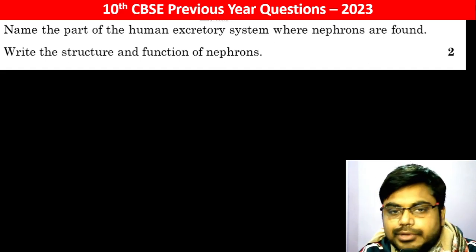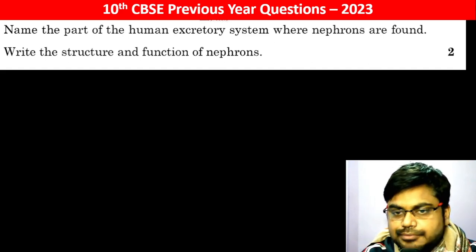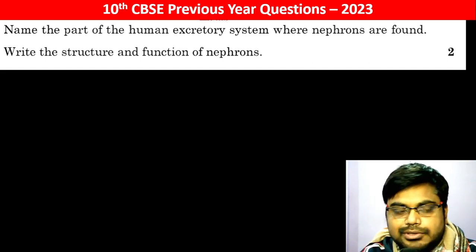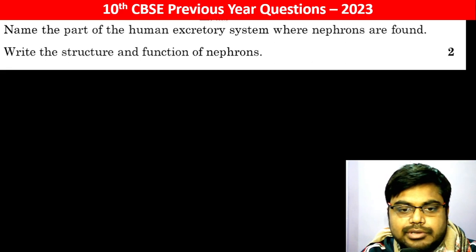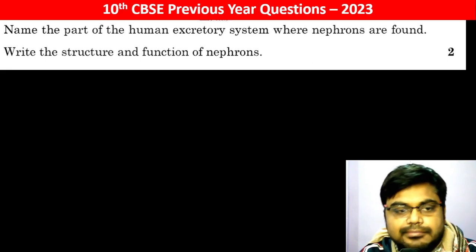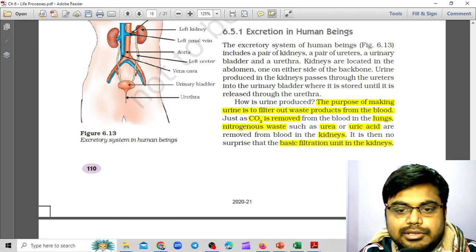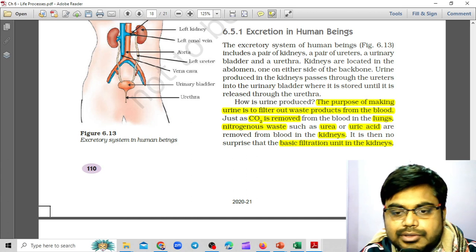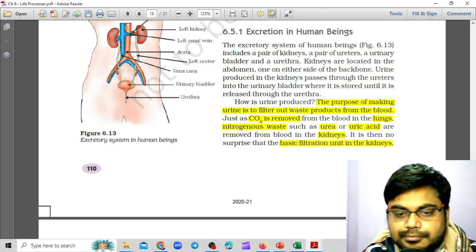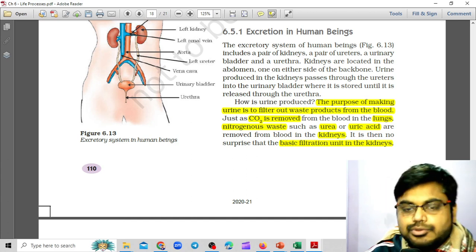Name the part of the human excretory system where the nephrons are found, and describe the structure and the function of nephrons. How is urine produced?